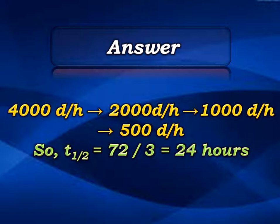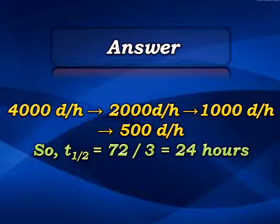So the element undergoes three half-lives to go from 4,000 down to 500 decay per hour. The total time is 72 hours divided by 3 half-lives, which equals 24 hours. Therefore, the half-life of this radioactive sample is 24 hours.